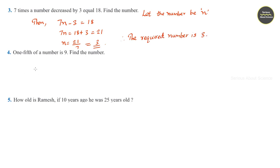Question number 4. One fifth of a number is 9. Find the number. Let the number be N. Then, the question is given by one fifth of a number. That is 1 by 5 times N is equal to 9.